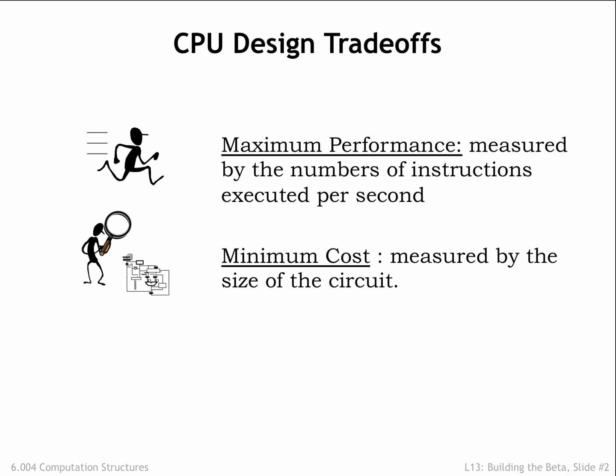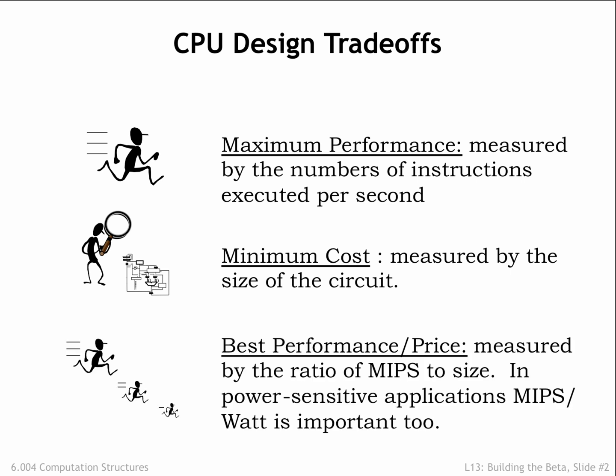Another goal might be to minimize the manufacturing cost, which in integrated circuit manufacturing is proportional to the size of the circuit. Or we might want to have the best performance for a given price. In our increasingly mobile world, the best performance per watt might be an important goal. One of the interesting challenges in computer engineering is deciding exactly how to balance performance against cost and power efficiency. Clearly, the designers of the Apple Watch have a different set of design goals than the designers of high-end desktop computers.